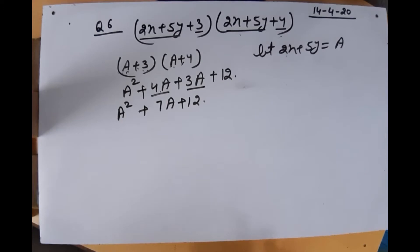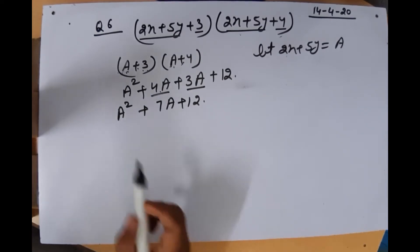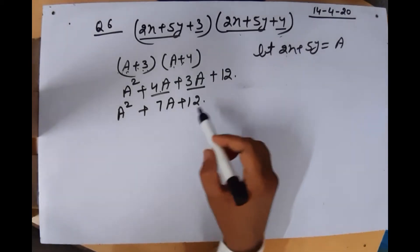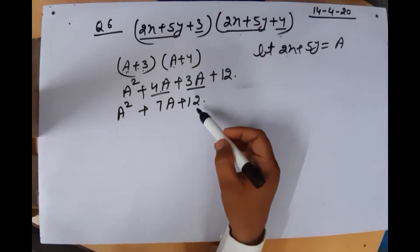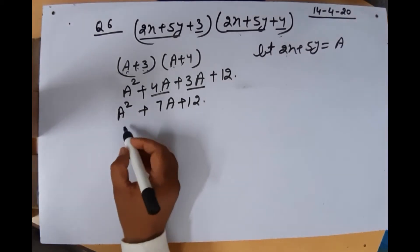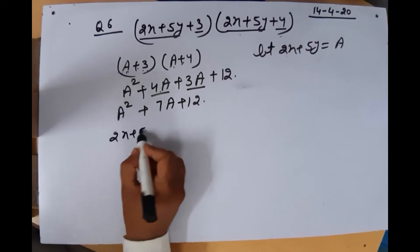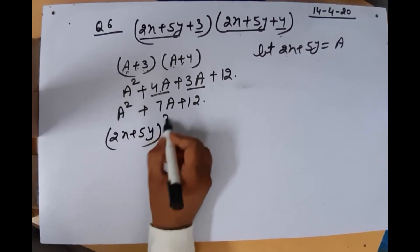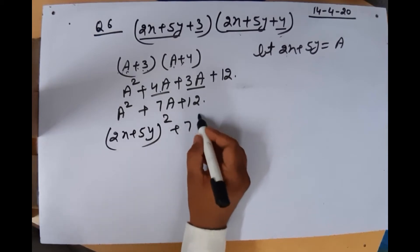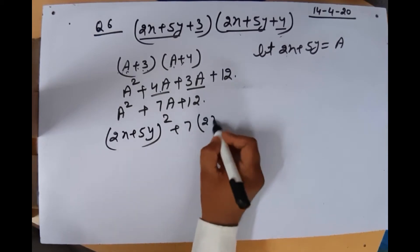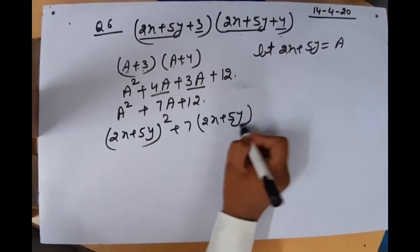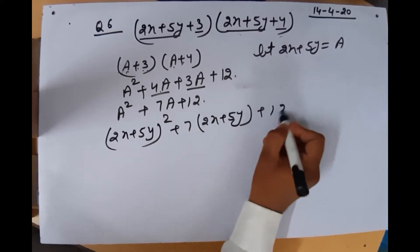Now putting the value of A back in. A² means (2x + 5y) whole square, and 7A means 7(2x + 5y), plus 12. So we have (2x + 5y)² + 7(2x + 5y) + 12.